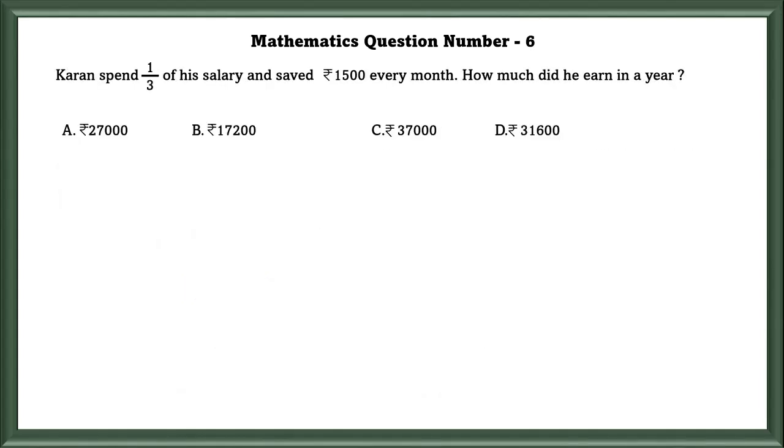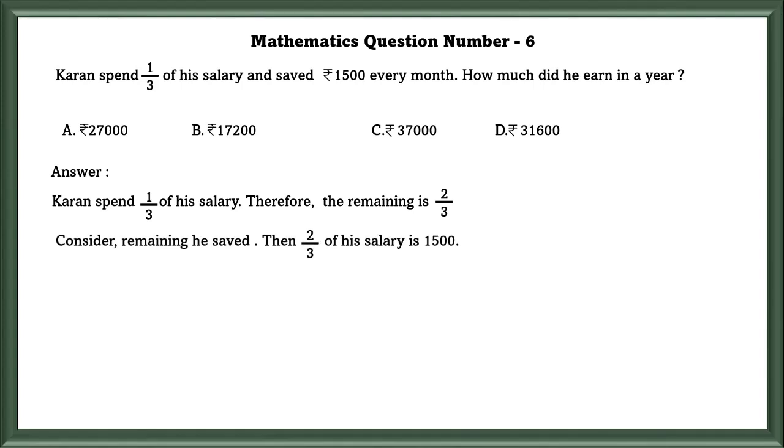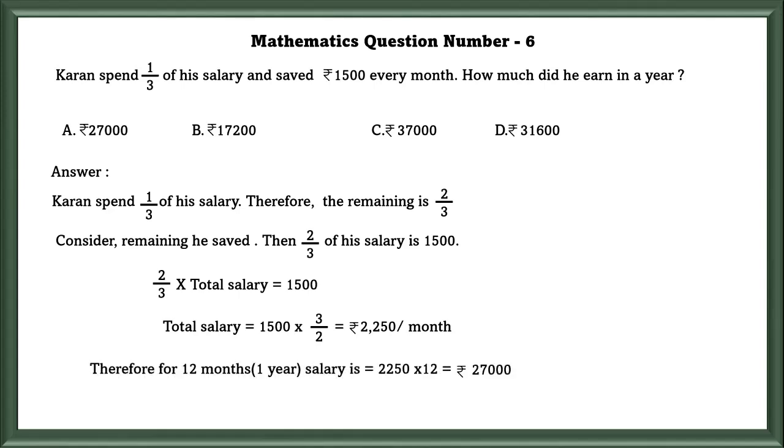Mathematics Question Number 6: Karan spent 1/3 of his salary and saved 1500 rupees every month. How much did he earn in a year? Karan spent 1/3 of his salary, therefore the remaining is 2/3. So 2/3 of his salary is equal to 1500. 2/3 times total salary equals 1500. So 1500 times 3/2, which is equal to 2250 rupees every month. So they have asked how much did he earn in a year? There are 12 months in a year, so we have to multiply his salary for 1 month times 12, which is equal to 27,000.